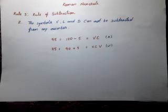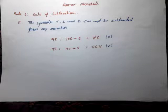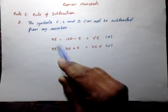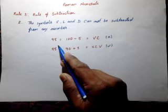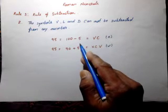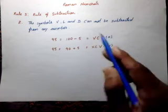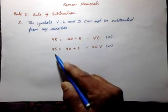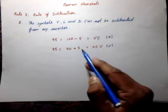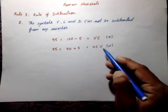The symbols V, L, and D cannot be subtracted from any number. For example, 95 cannot be written as 100 minus 5, which would be VC. Instead, 95 should be written as 90 plus 5, which equals XCV.